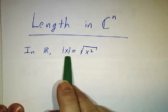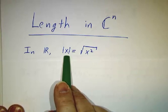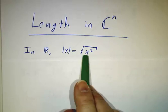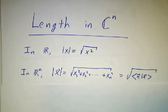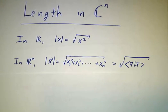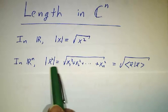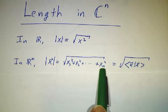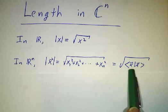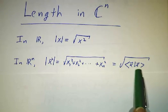For ordinary real numbers, we had that the length of a real number, that's its absolute value. We could get that by the square root of x squared. And if we were in R^n, the Pythagorean theorem tells us that the length of a vector is the square root of x1 squared plus x2 squared up to xn squared. And that was the square root of x dotted into x, where we used the standard inner product.